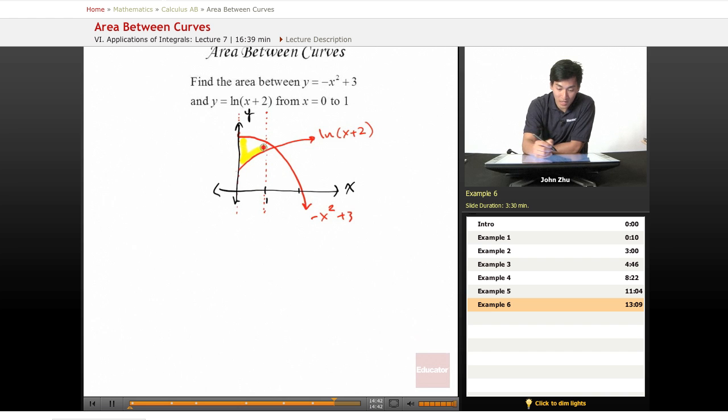So that becomes our f of x, negative x squared plus three. So this is the region we're looking for. Let's make this really focused here. It's this little tiny chunk right here.